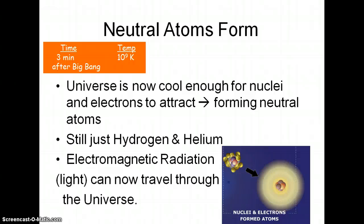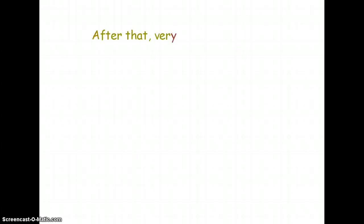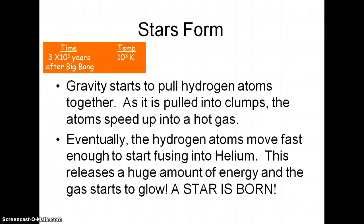Three minutes after the Big Bang, the universe has cooled off much more. Now it's going to be cool enough for these positive nuclei to attract the negative electrons, so we get our first neutral atoms — still just hydrogen and helium, but we do get those. Electromagnetic radiation, such as light, is now able to travel through this universe.